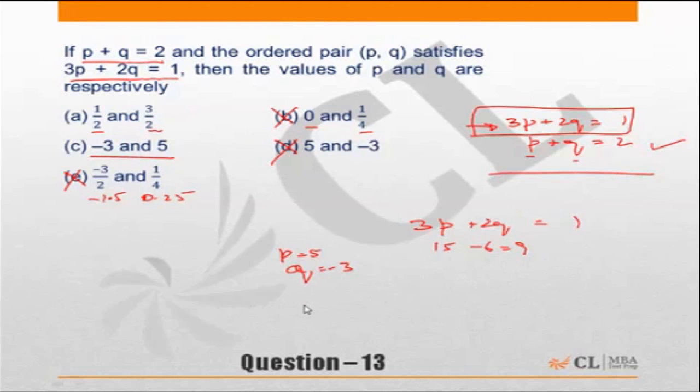What about minus 3 and 5? If I put p equal to minus 3, q equal to 5, then we have 3 into minus 3 is minus 9, and 2q with q equal to 5 gives us 10.